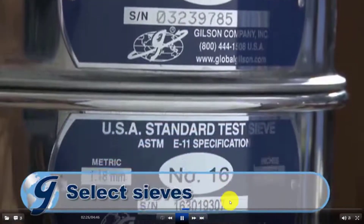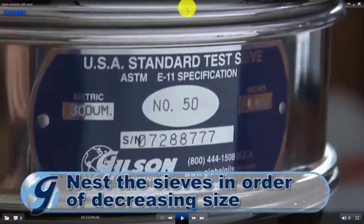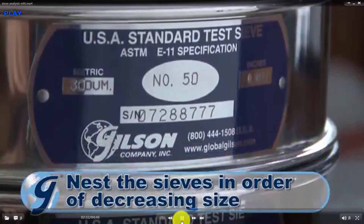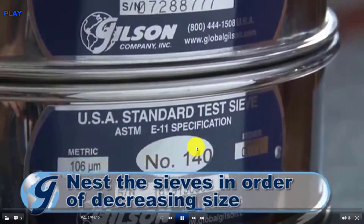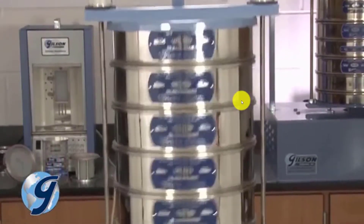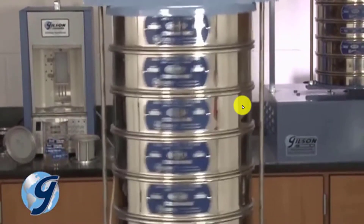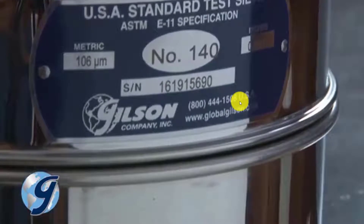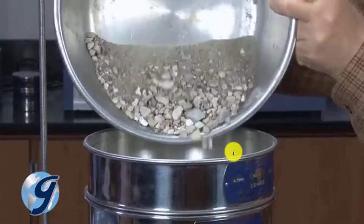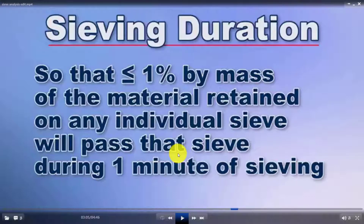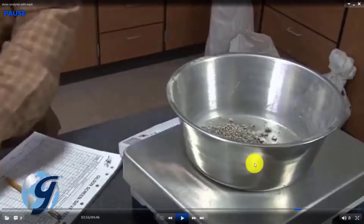Measure the tare weight of each sieve. The arrangement from top to bottom is sieves number 4, 8, 16, 30, 50, and 100, with a pan at the bottom. Agitate on the sieve shaker so particles have the opportunity to pass through the openings. If the mass retained on a sieve changes by less than 1% between two intervals, the material has been adequately sieved. After sieving, record the weight retained on each sieve.